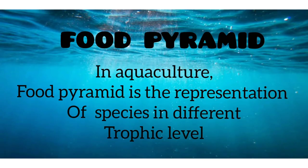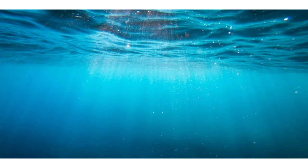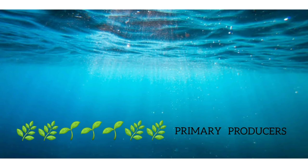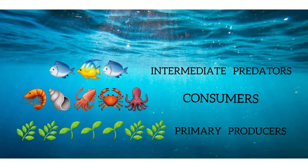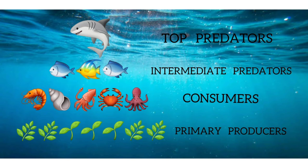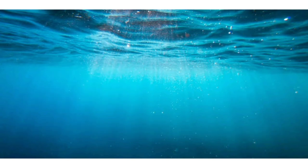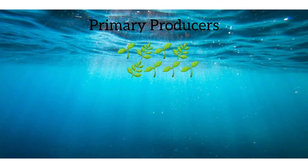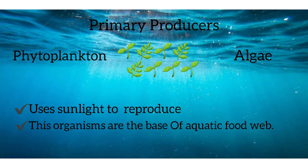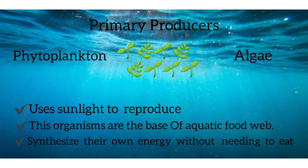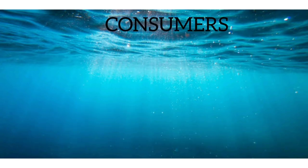Food pyramid. In aquaculture, food pyramid is the representation of species at different trophic levels. This includes primary producers, consumers, intermediate predators, and top predators. Primary producers include phytoplankton and algae. They use sunlight to reproduce, form the base of the aquatic food web, and synthesize their own energy without needing to eat.